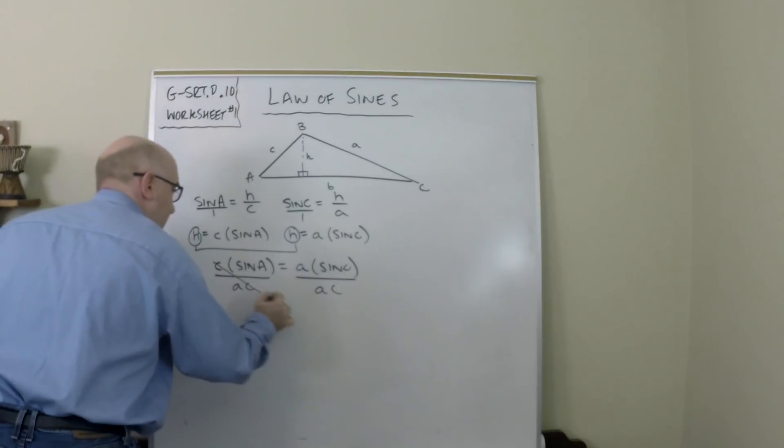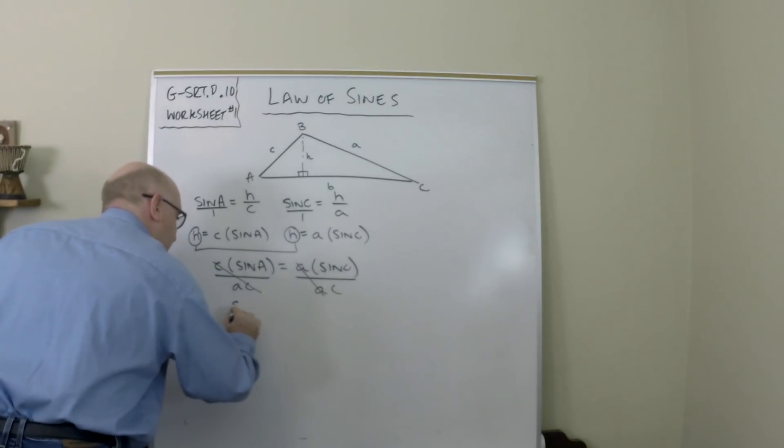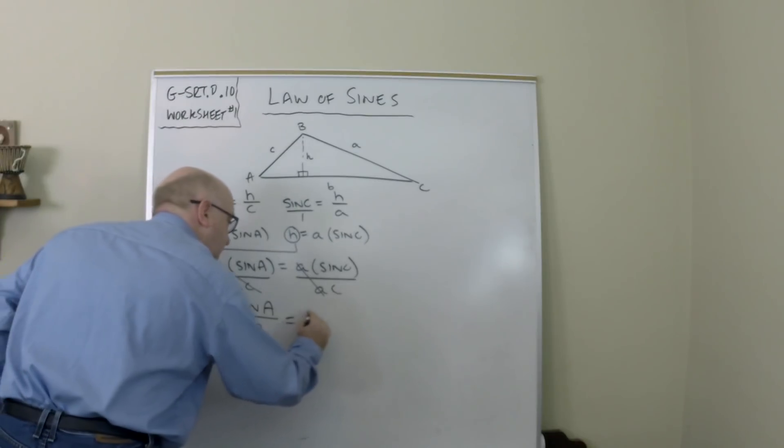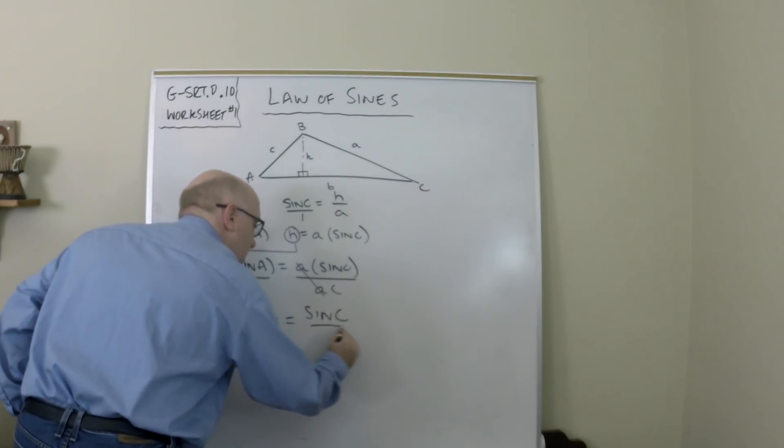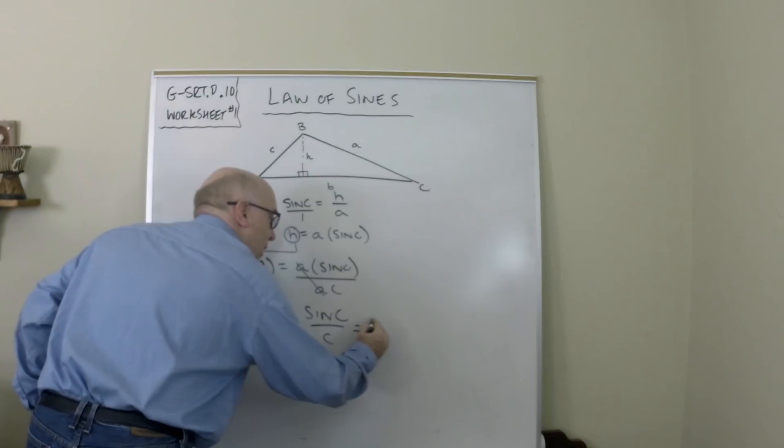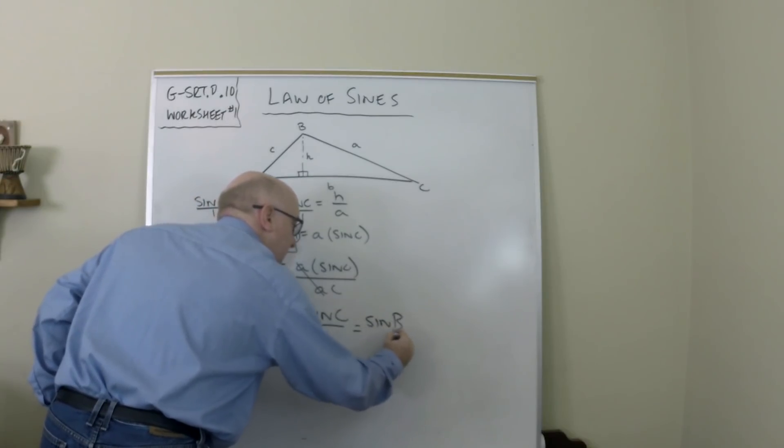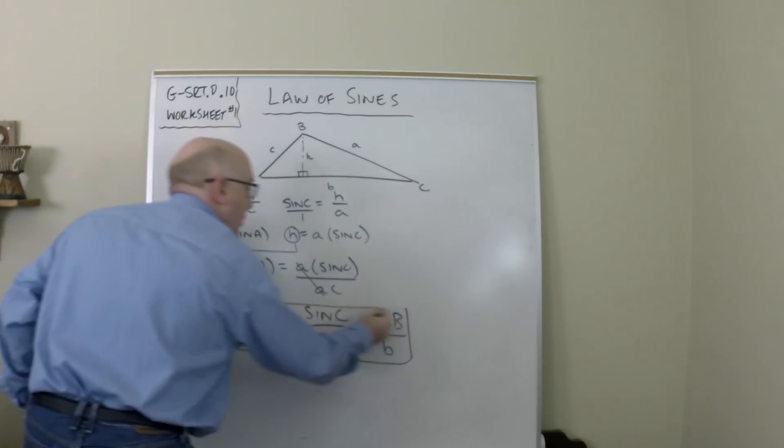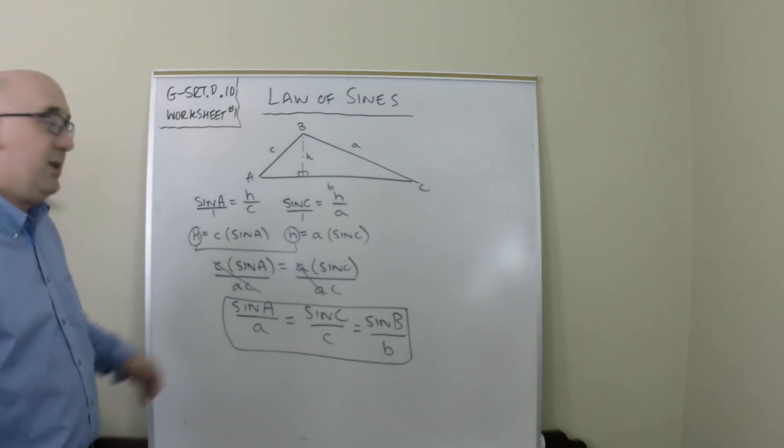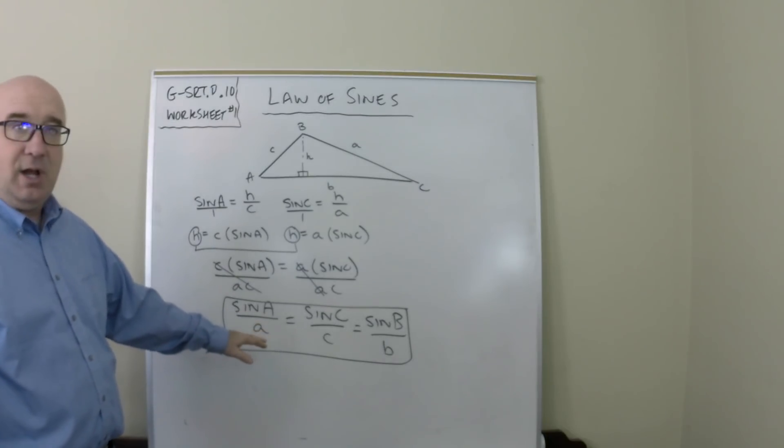The C's and the A's will cancel, and we get the sine of A over a equals the sine of C over c. Now if we went back and redid the lines and so on, we would also obtain the other portion of this, which would be the sine of B over b. This is known as the law of sines.